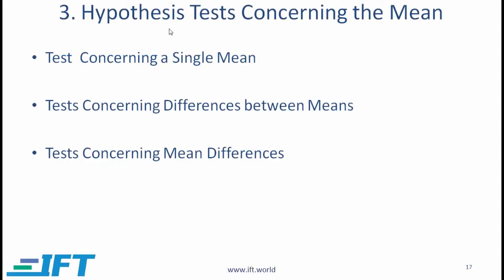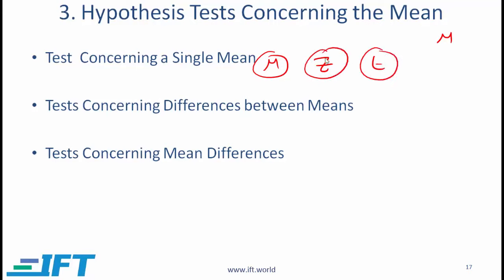We will now take a look at hypothesis tests concerning the mean of a population, and this has three sub-segments: tests concerning a single mean, which is what we have already done in the previous section. The difference is that we will now look at the Z distribution and T distribution and decide which one to use under what circumstances. We'll then talk about tests concerning differences between means and tests concerning mean differences. These two might sound fairly similar, but they have different meanings.